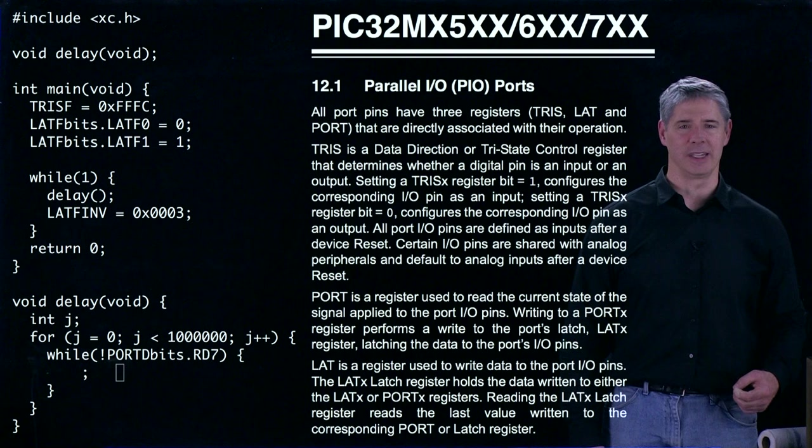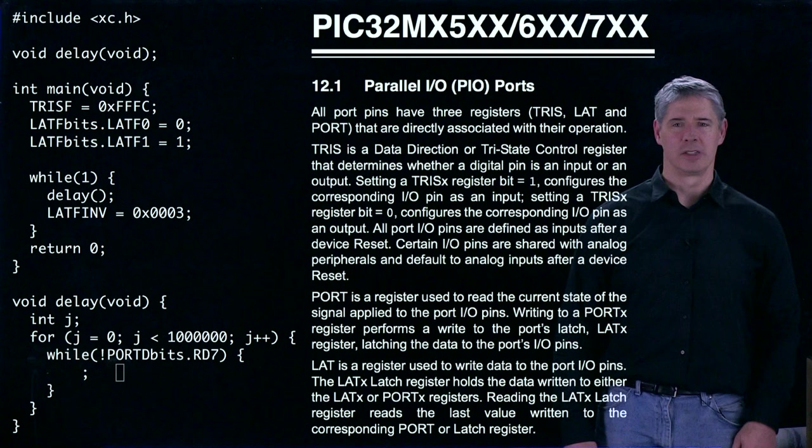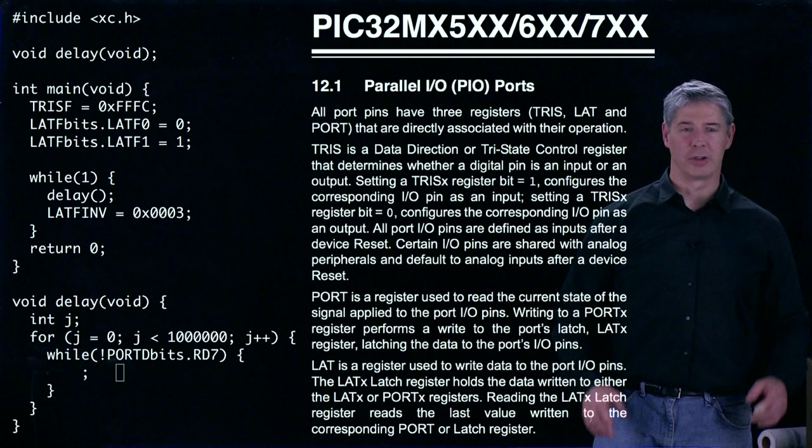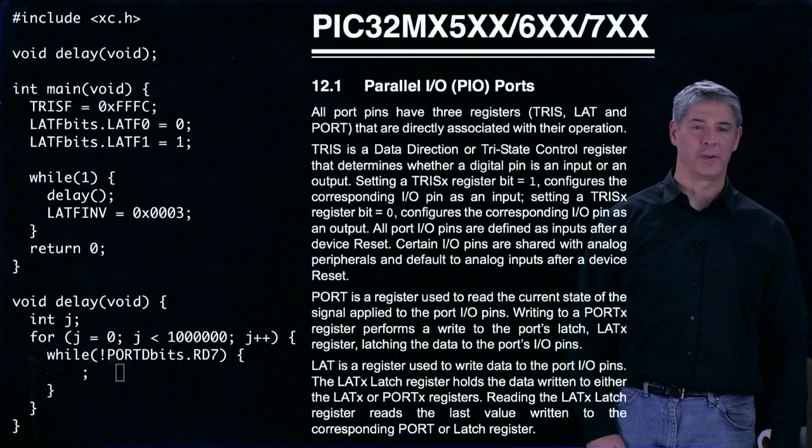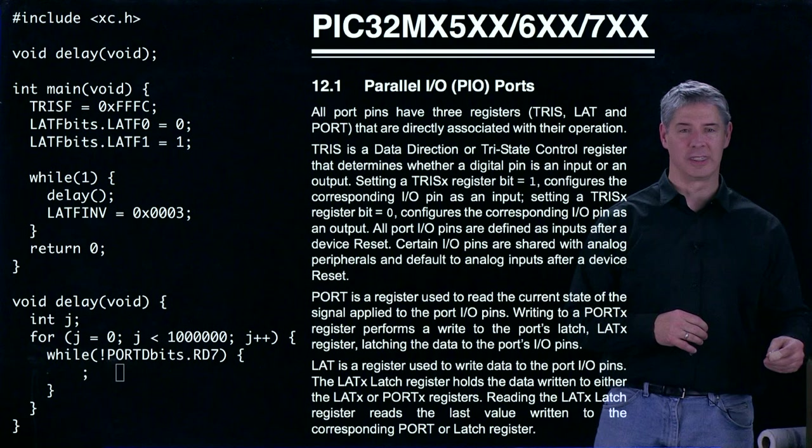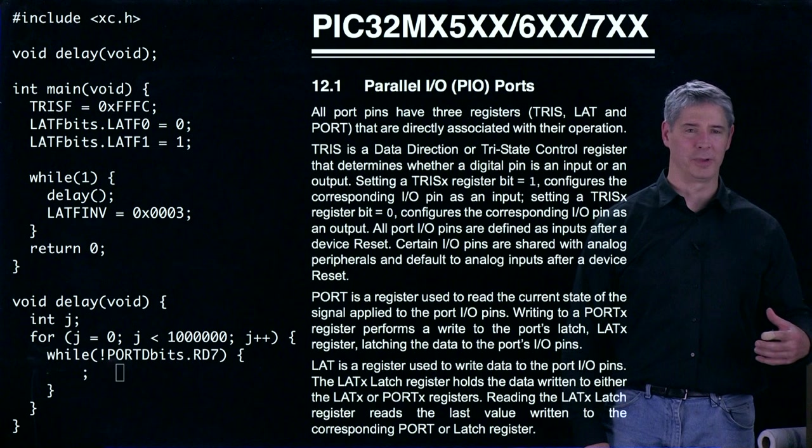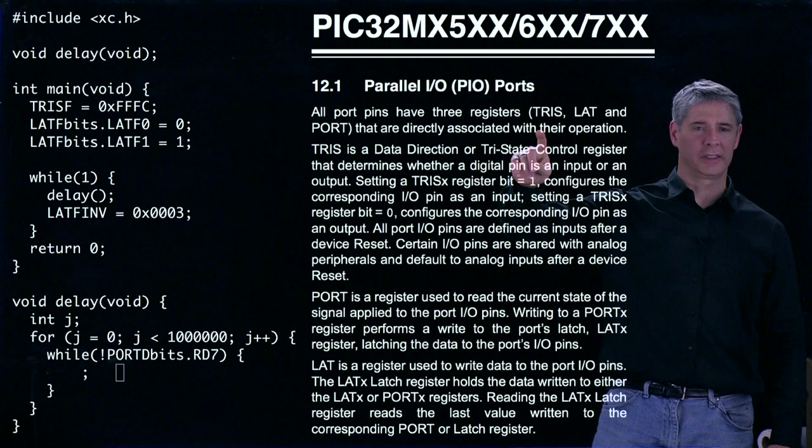We find out that TRIS, which is short for tri-state, determines whether a digital I/O is input or output. So here when we're setting the TRIS F values, we're actually setting whether certain digital inputs are inputs or outputs. LAT special function registers are controlling the values written to digital outputs. And PORT special function registers return the digital inputs on input pins. So LAT is for outputs, PORT is for inputs, TRIS determines whether the pin is an input or output.